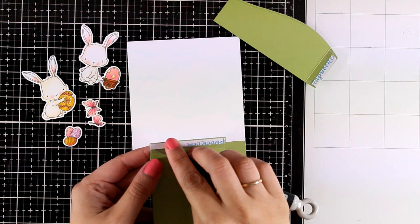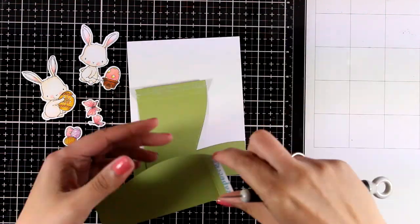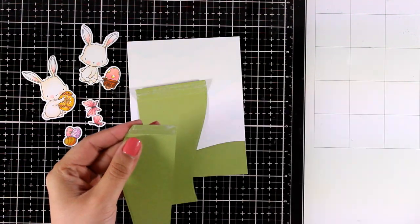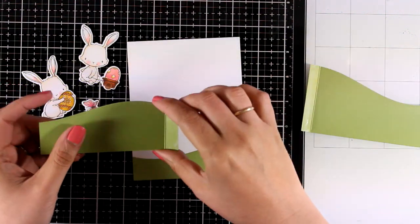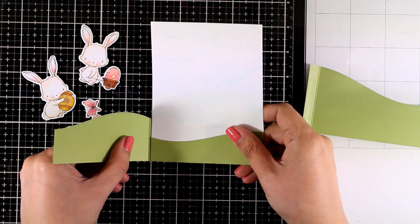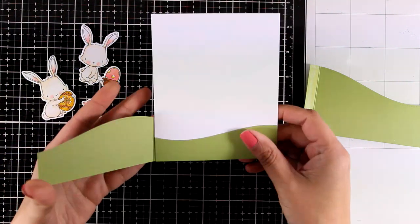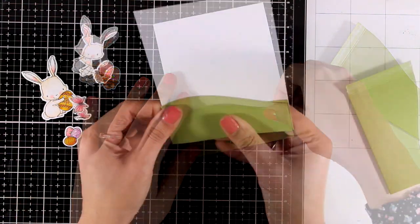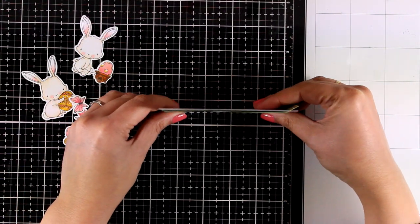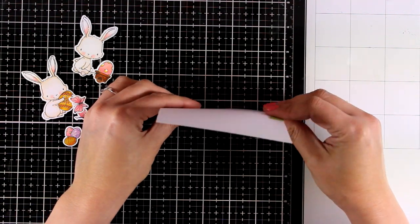Now I added some double-sided tape at the back of those flaps, and I'm going to put my card together. This is a card where the inside is exposed—the flaps are part of the design and they actually create my hills. On the inside of those flaps you can write your message.